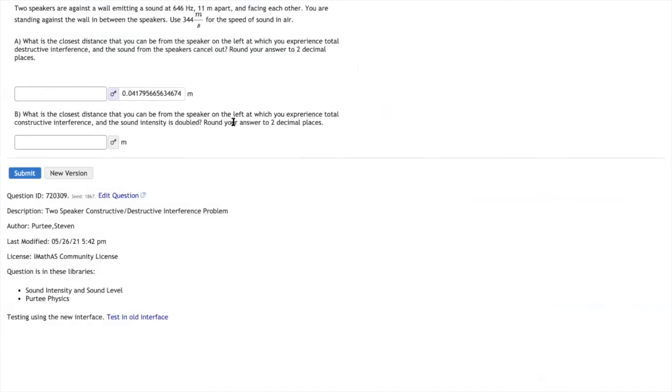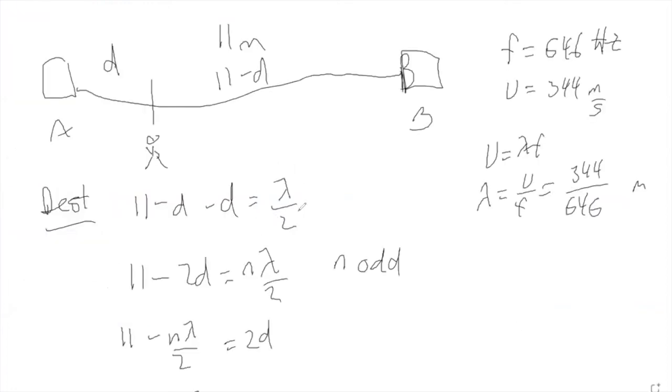Now to solve when we have constructive interference, perfect constructive interference, we can't just take this answer. It would be nice if we could just take that answer and move over by half a wavelength or something. No, we kind of have to start over. Because right here at this step, we didn't want a lambda over 2. We wanted a lambda.